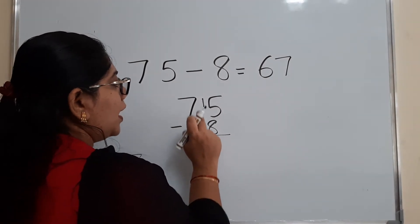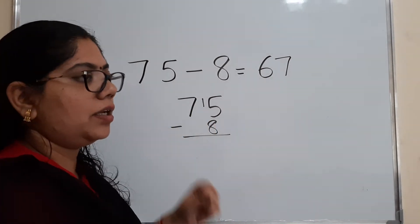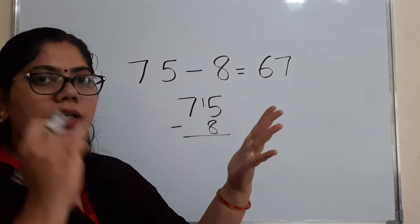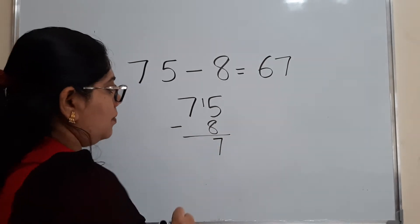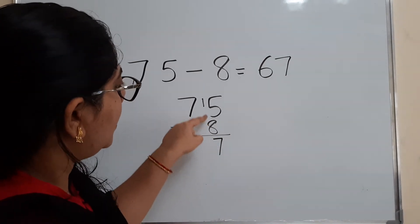So adding with 8, what will you get? 15. 9, 10, 11, 12, 13, 14, 15. So 7. So 7 plus 8 means 15.